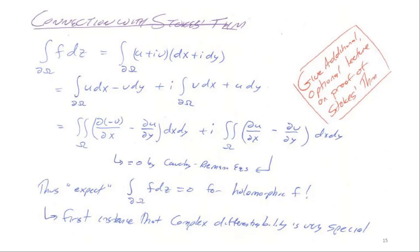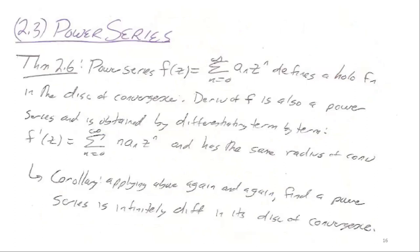Power series are written as sums of a_n z^n. If there are negative-power terms, it's called a Laurent series. There will typically be a disk (or region) where the series converges, and within the disk of convergence you can differentiate term by term. This is the region of absolute convergence.